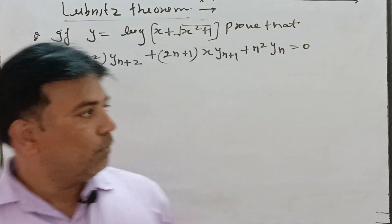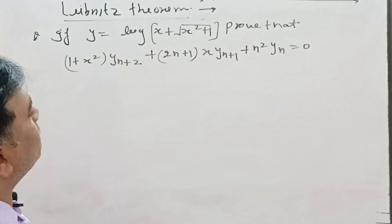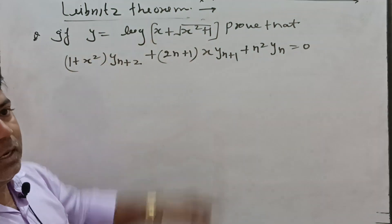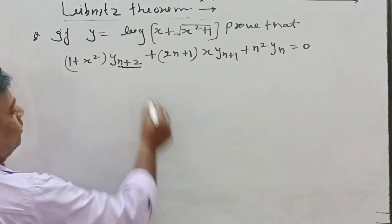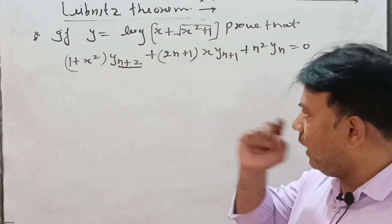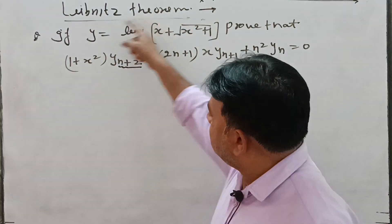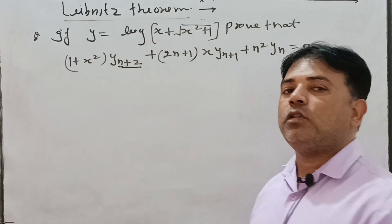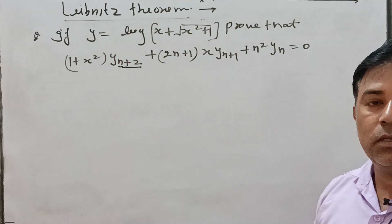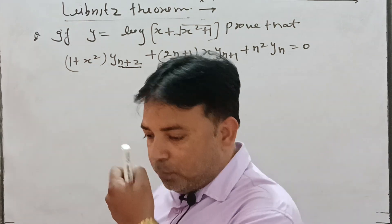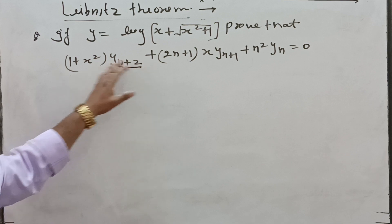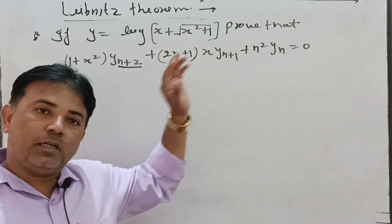Let's start this video. Given y = log(x + √(x²+1)), we need to prove the formula for the (n+2)th derivative. Using the Leibniz theorem we can find the nth derivative, but the question requires the (n+2)th derivative. So first we differentiate this function two times, and after that we apply the Leibniz theorem.